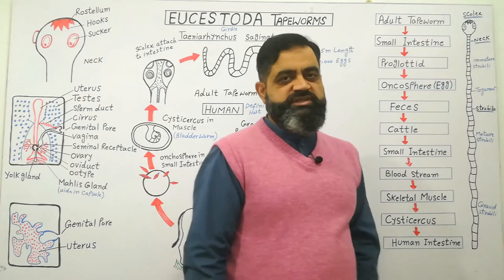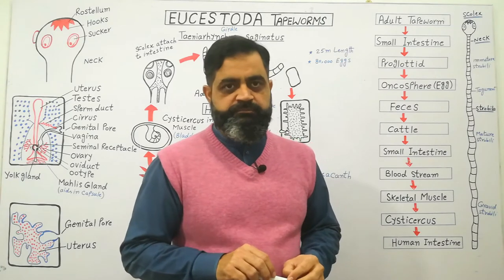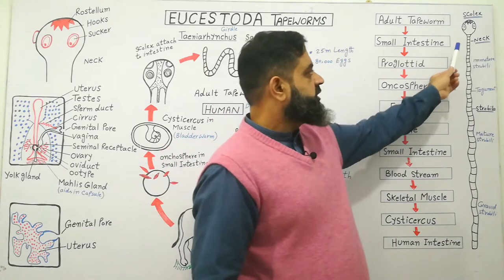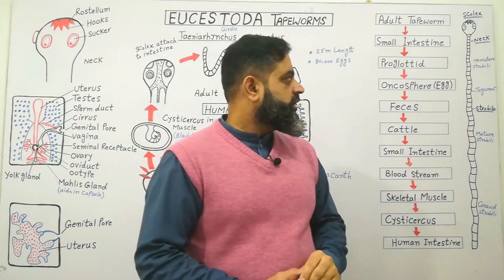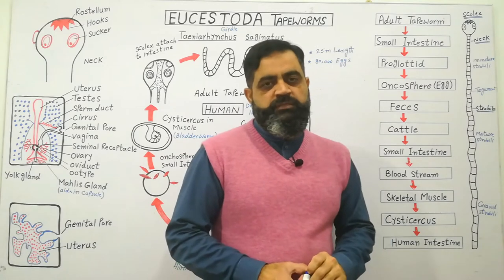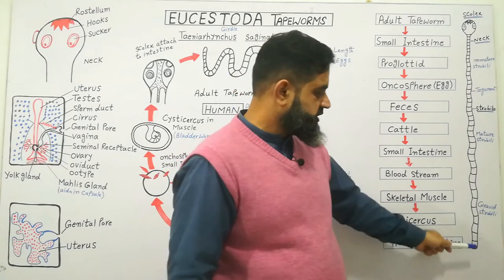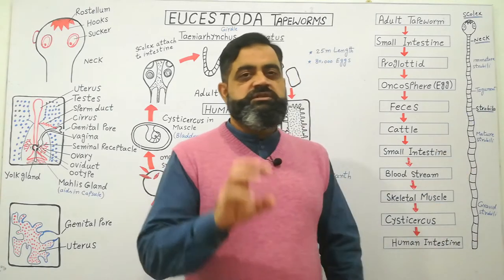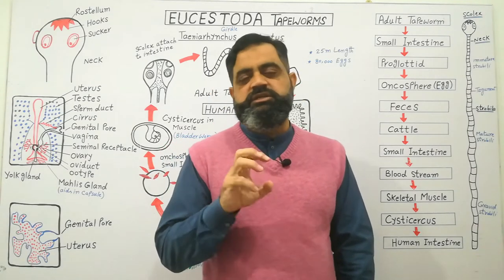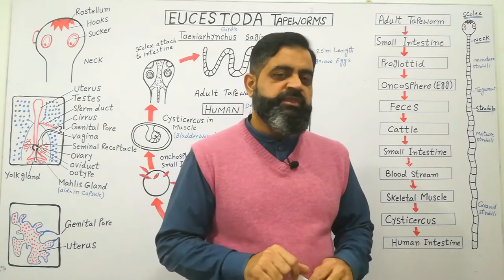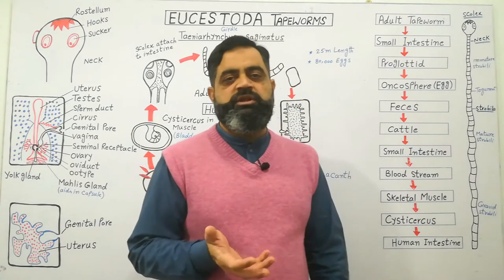Just beneath the scolex, which is the head region, there is a region known as the neck — that is the growing region of the animal. After that there is a long tape-like structure known as the strobula. This strobula contains small transverse constrictions which make the body into tiny segments. These tiny segments are known as proglottids, which collectively are called strobula, and if there are many, we call it strobili.